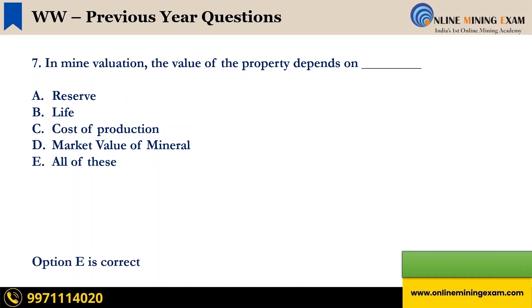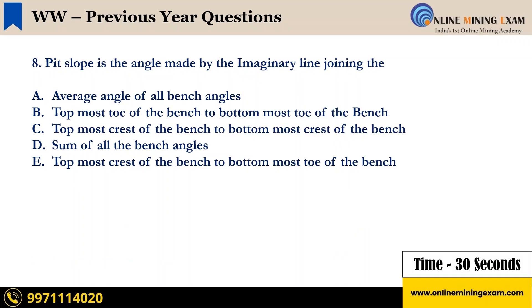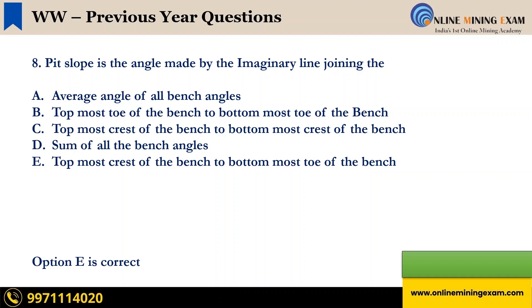Time up. The correct answer is E, all of these. Next question. Pit slope is the angle made by the imaginary line joining the: A) Average angle of all bench angles, B) Topmost toe of the bench to bottommost toe of the bench, C) Topmost crest of the bench to bottommost crest of the bench, D) Sum of all the bench angles, E) Topmost crest of the bench to bottommost toe of the bench. Your time starts now. Time up. The correct answer is E, topmost crest of the bench to bottommost toe of the bench. Next question.